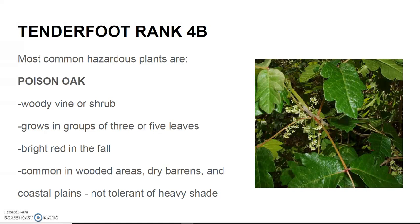Poison Oak is a woody vine or shrub that grows in groups of three or five leaves, almost always odd numbers. It has bright red leaves in the fall and is common in woodland areas, dry barrens, and coastal plains. It is not tolerant of heavy shade. Notice the oak-shaped leaves.